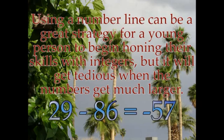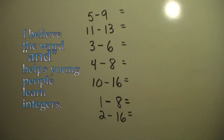Using a number line can be a great strategy for a young person to begin honing their skills with integers, but it will get tedious when the numbers get much larger. For example, twenty-nine minus eighty-six is negative fifty-seven.